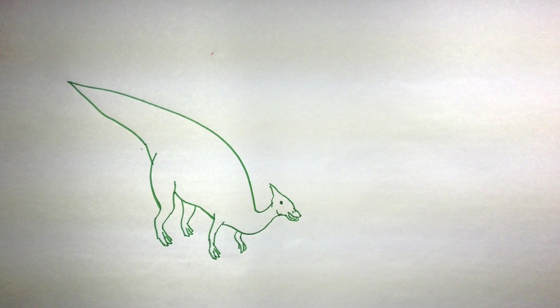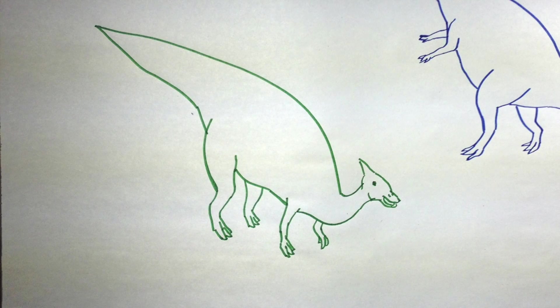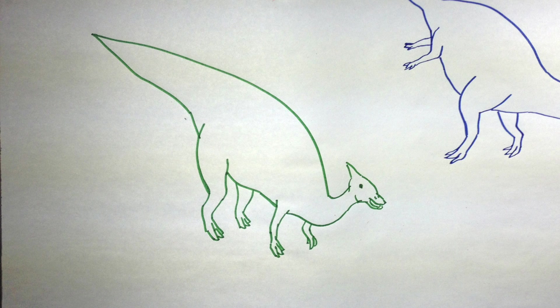I've often seen Saurolophus walking on all four limbs, but people say that it was able to walk on two. It seems like it was too big to do this.